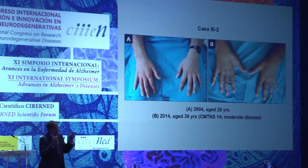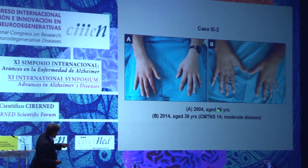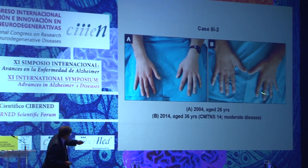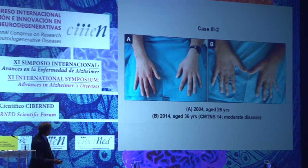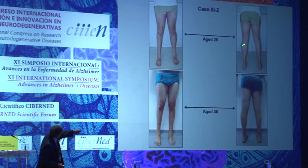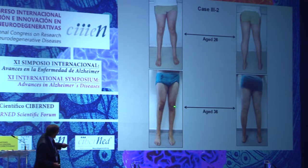The older brother of the proband, who was 26 years old in 2004 and 36 in 2014, shows incipient but not clear atrophy of the first dorsal interosseous. Ten years later there is progression with clear atrophy of the first dorsal interosseous. At age 26 there is asymmetric peroneal muscular atrophy, even hypertrophy of the posterior muscle compartment of the lower leg. Ten years later there is progression of the lower legs with disappearance of that hypertrophy.